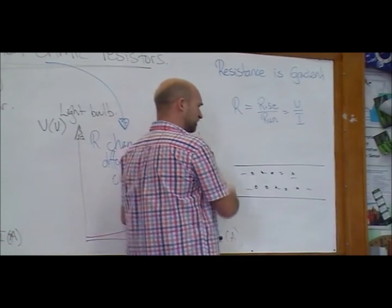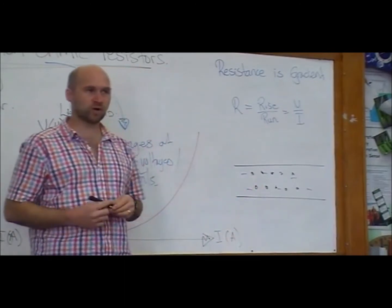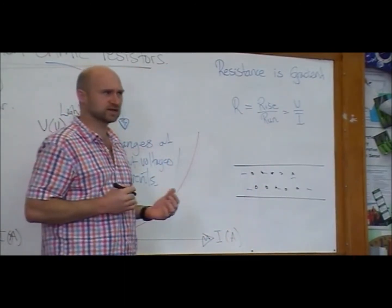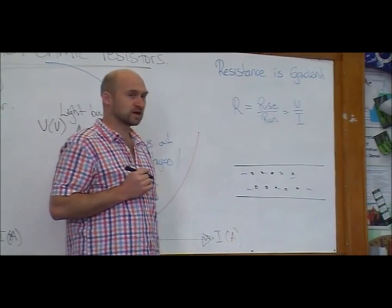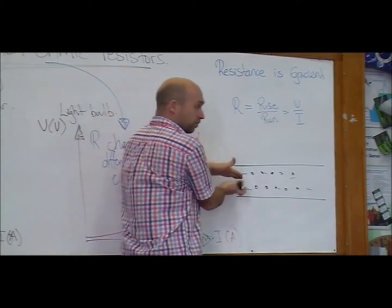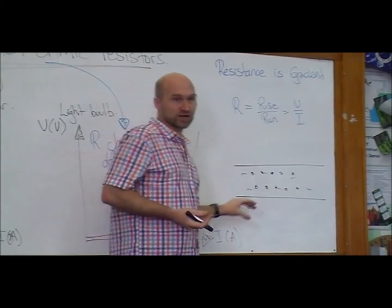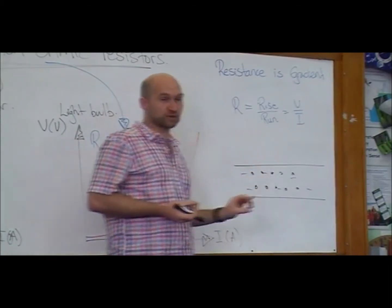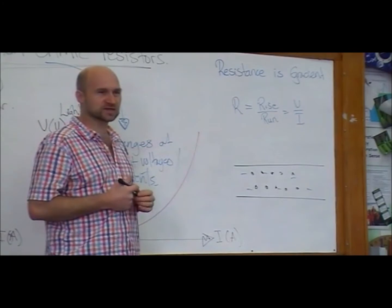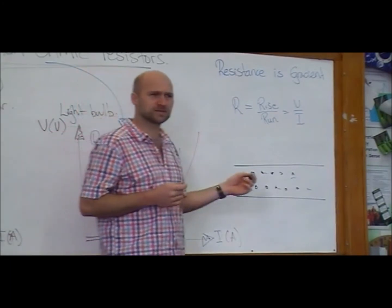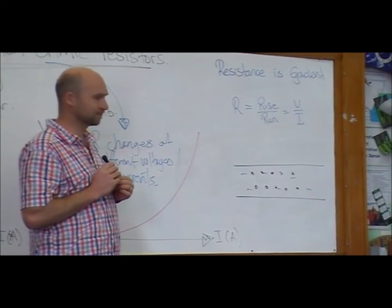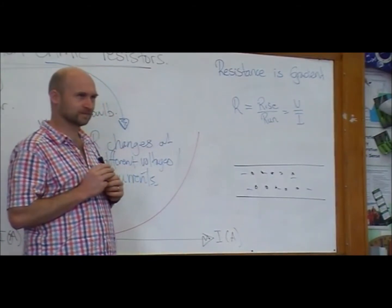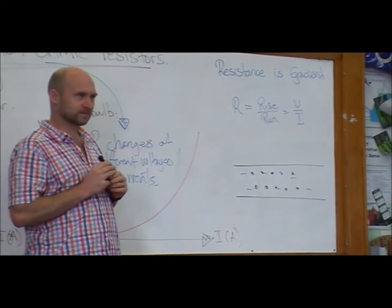What are other things that we could change about a wire that would increase the resistance? Make it smaller. Make it thinner. So the thinner the wire, the less area there is for the electrons to travel through, so the greater the resistance. What else? Does that work, sir? Because wouldn't there still be like the same ratio of electrons to atoms if you just make the wires smaller?